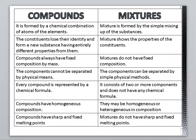Now let's look at the differentiation between compounds and mixtures. In a compound, elements are chemically bonded. In a mixture, elements or compounds are not chemically bonded. A compound is formed by chemical combination of atoms of the elements. A mixture is formed by the simple mixing of substances. The constituents in a compound lose their identity and form a new substance with entirely different properties, whereas a mixture shows the properties of its constituents. Compounds always have a fixed proportion by mass; mixtures do not have a fixed proportion.